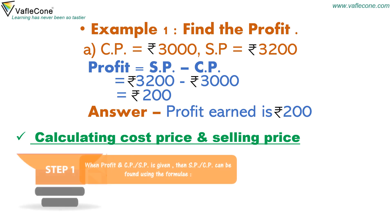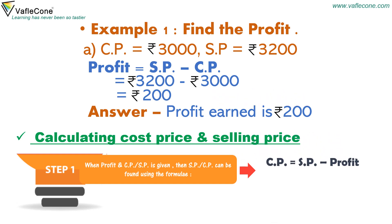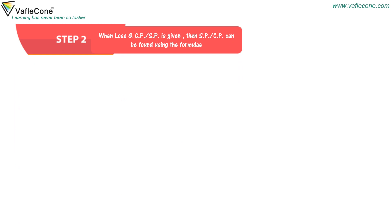When profit and cost price or selling price is given, selling price or cost price can be found using: cost price equals selling price minus profit; selling price equals cost price plus profit. When loss and cost price or selling price is given, the formulae are: cost price equals selling price plus loss; selling price equals cost price minus loss.